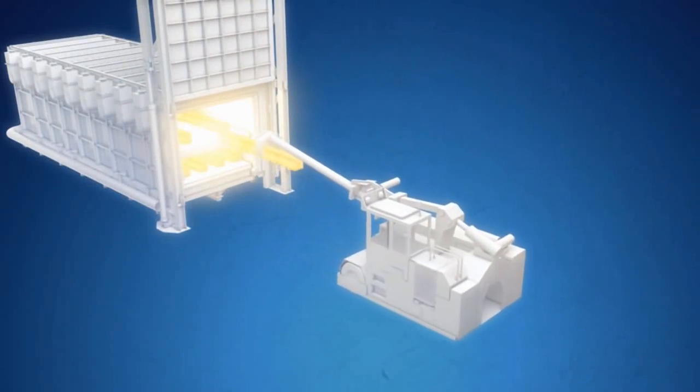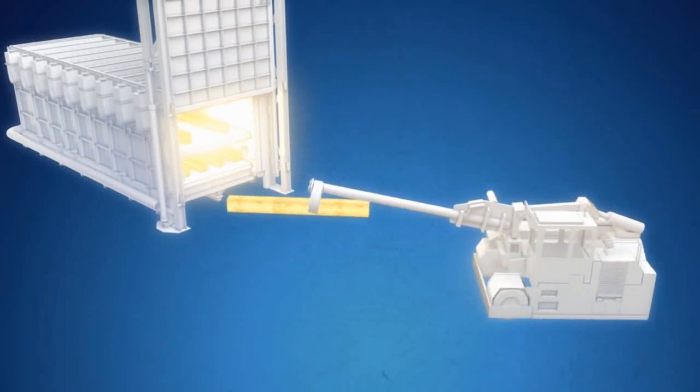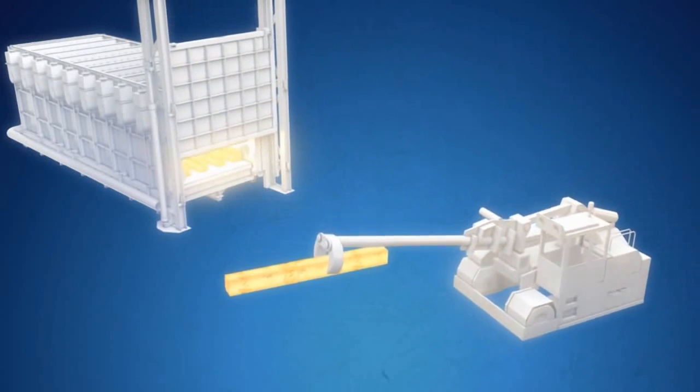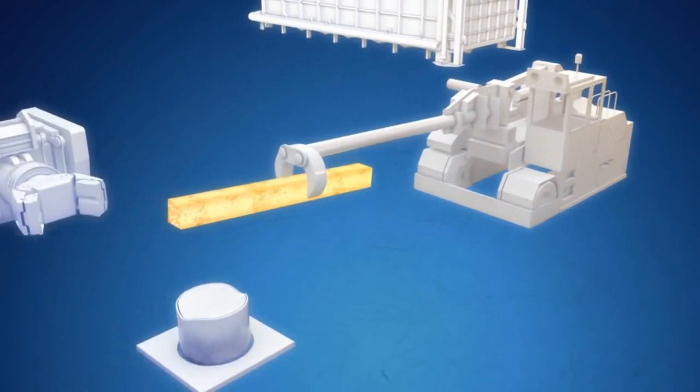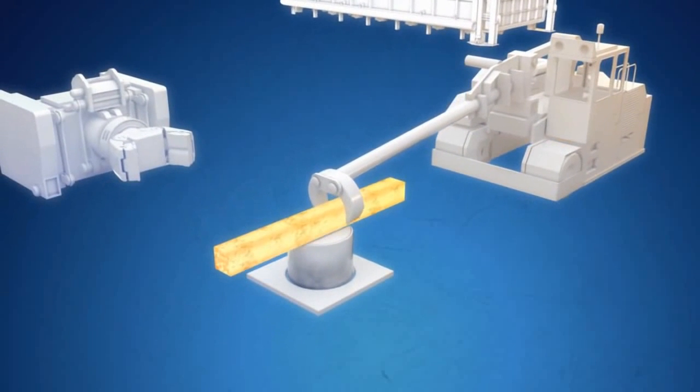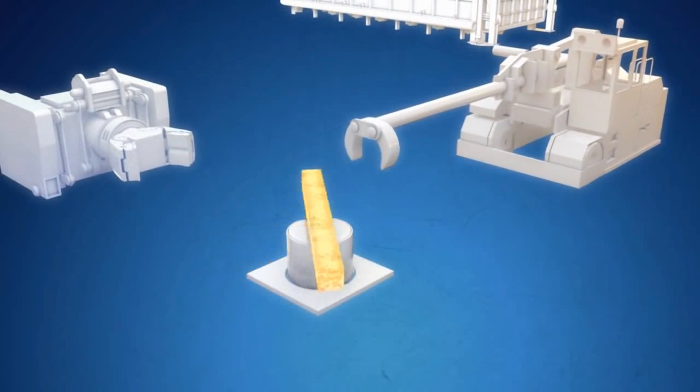The pre-rolled ingots are then heated to 1260 degrees centigrade to optimize further processing, after which they are transported to the computerized forging press.